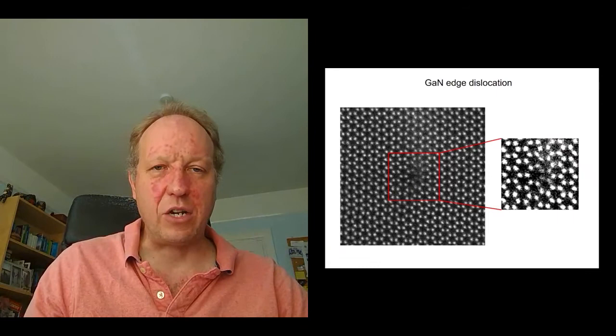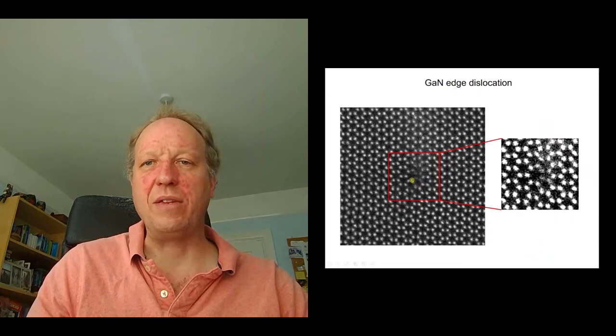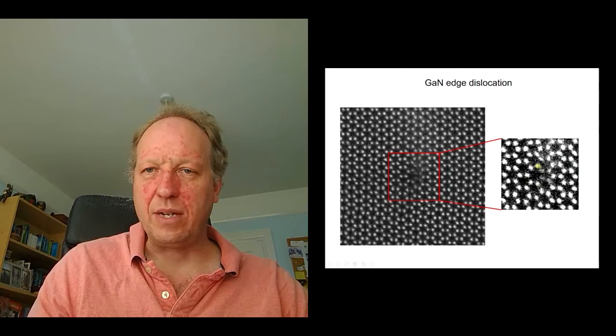You may remember that I, when I mentioned a dislocation core, I said there's this extra half plane, partial plane of atoms. In this case, the extra half partial plane coming in from the right hand side finishes right here. And if we zoom in on this area, you can see that rather than having a nice hexagon here, we've got seven atoms in a ring there. And then next to it, five atoms in a ring. So the heart of the dislocation, the dislocation core, as we call it, is composed of the seven membered ring and a five membered ring.